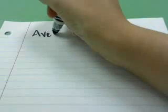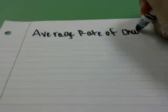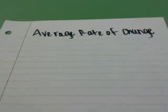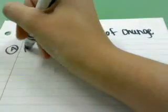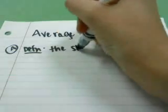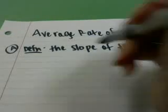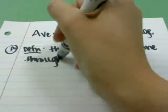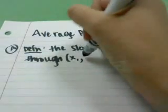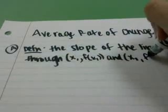Today in PreCal, we talked about the average rate of change and even, odd, neither functions. I'm going to start with the average rate of change. Part A definition of that is it's the slope of the line through two points such as x1, f of x1, and x2, f of x2.